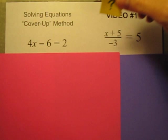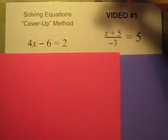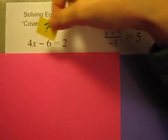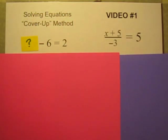So in the cover-up method, what you do is you just cover up a chunk of the equation, the chunk that has the variable in it. So I'm going to just cover up that 4x for a minute. And now it's just a simple subtraction equation. What minus 6 equals 2. And that's really easy. 8 minus 6 equals 2. So whatever I'm covering up there must be equal to 8.